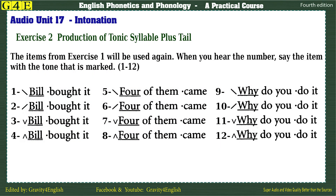Exercise 2. Production of tonic syllable plus tail. The items from Exercise 1 will be used again. When you hear the number, say the item with the tone that is marked.